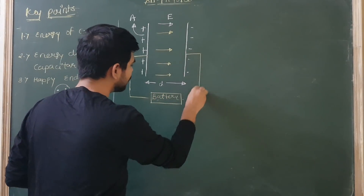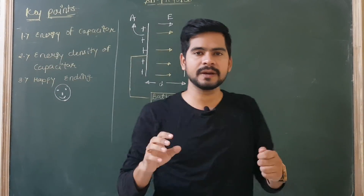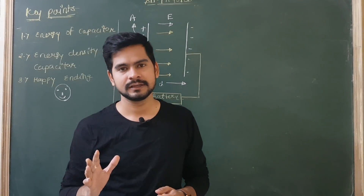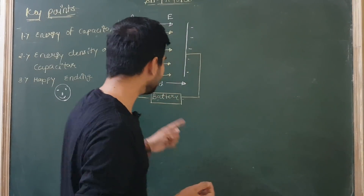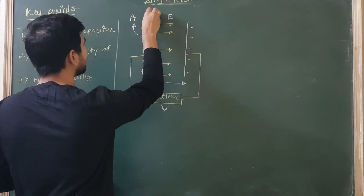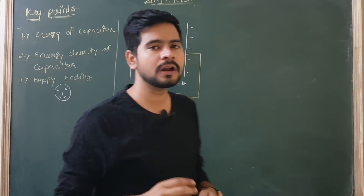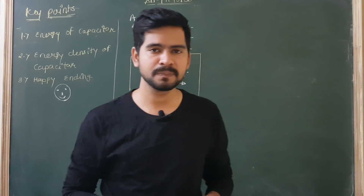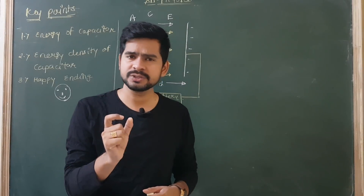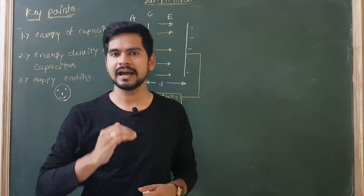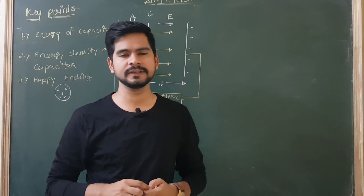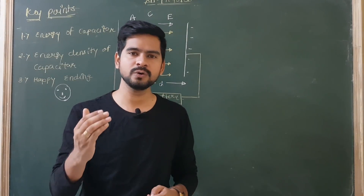If you have a capacitor, it means you don't have energy yet — the capacitor must be charged first. How can we charge the capacitor? Simply by using a battery. So let's say there is a battery of voltage V which will charge the capacitor. Energy means the ability to do work. Work means force into displacement — 100%. So the question arises: why is there force in this capacitor?